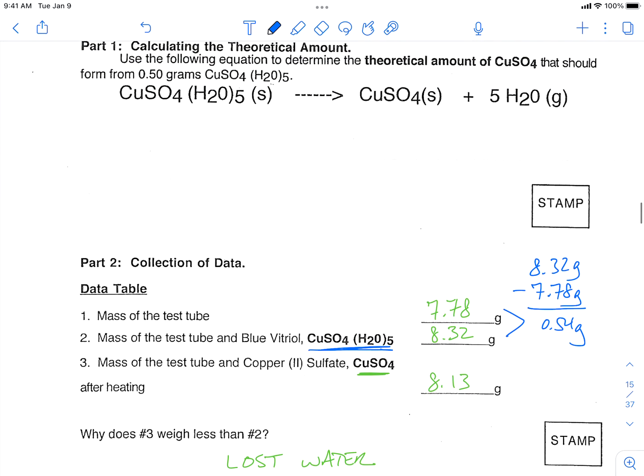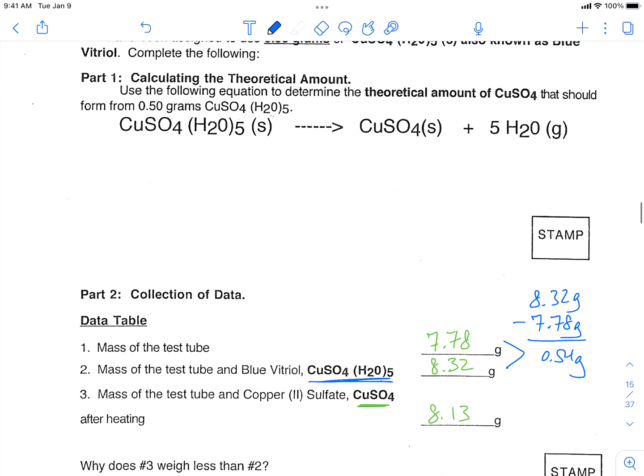So up here at the top, we're going to calculate our theoretical yield, which is what we should have gotten if we started out with 0.54 grams of our copper sulfate pentahydrate. So we're going to convert that in a three-step type problem. We're using three conversion factors into grams of just copper sulfate.